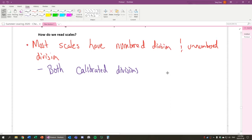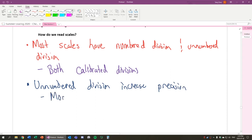So what does the unnumbered division give us? It gives us more precision. The unnumbered division gives us more precision because they are the ones that are going to be the extra decimals, for example. And if there's more precision, there's more sig figs because of that.